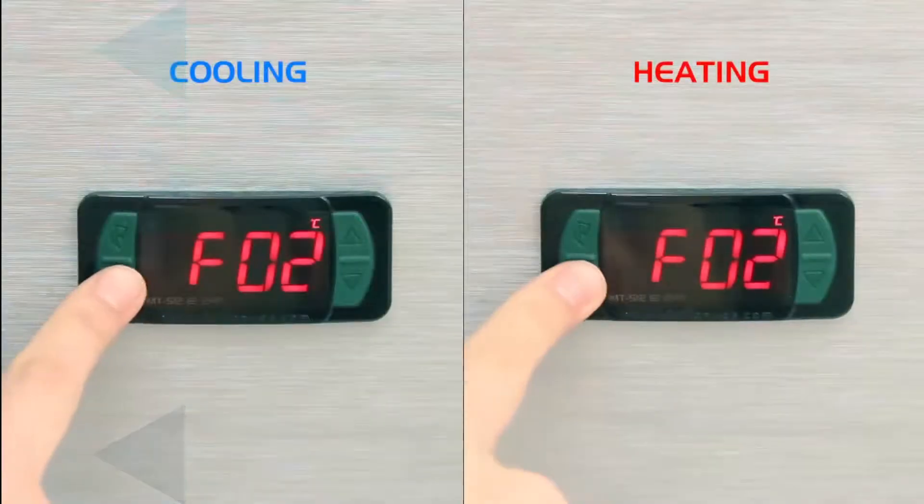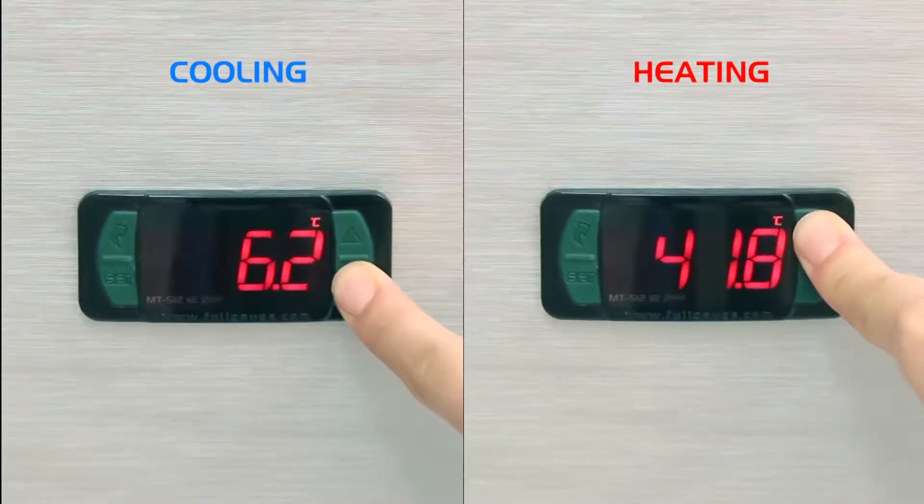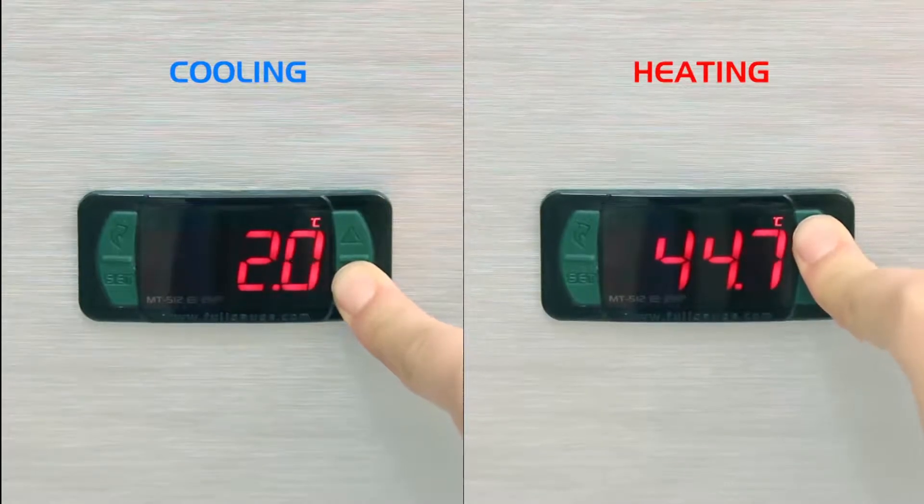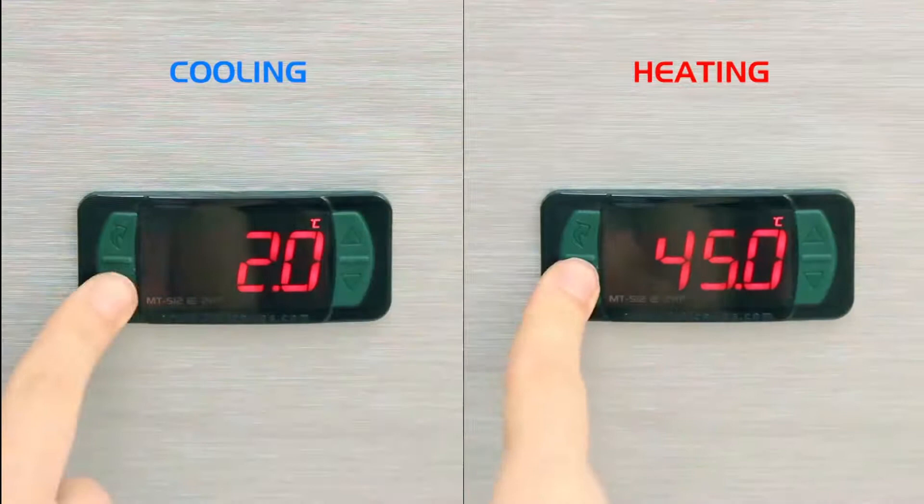F02 Set point: Set point is the temperature we want to keep. It's also the point where the load control relay is turned off. In the examples, we adopted a set point of 2 degrees Celsius in cooling and 45 degrees Celsius in heating.